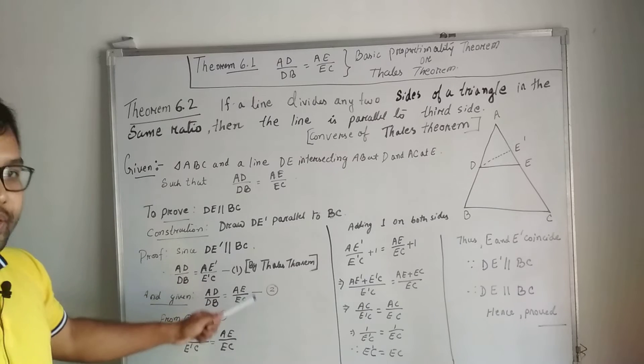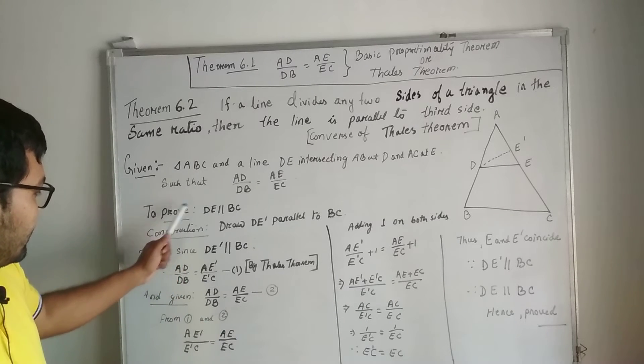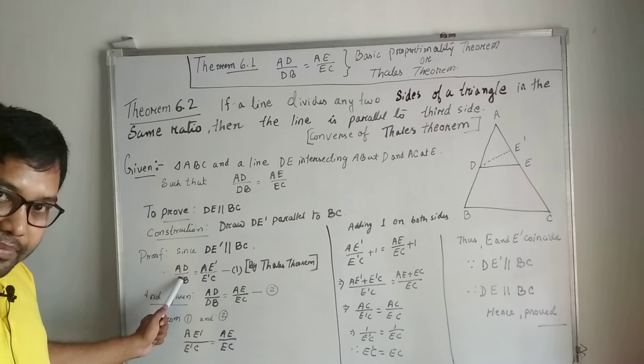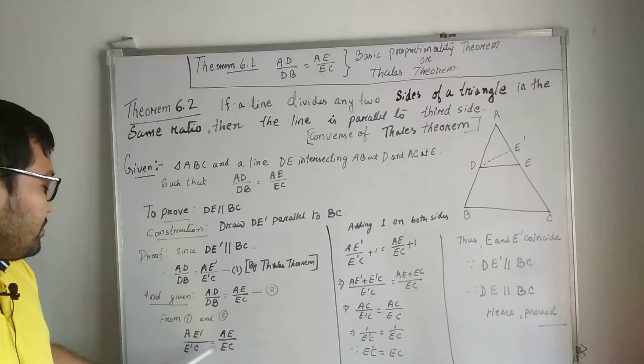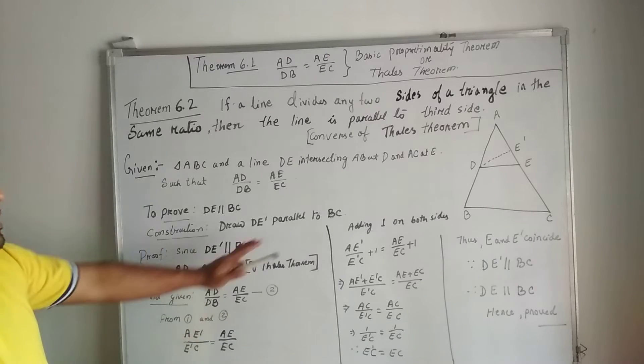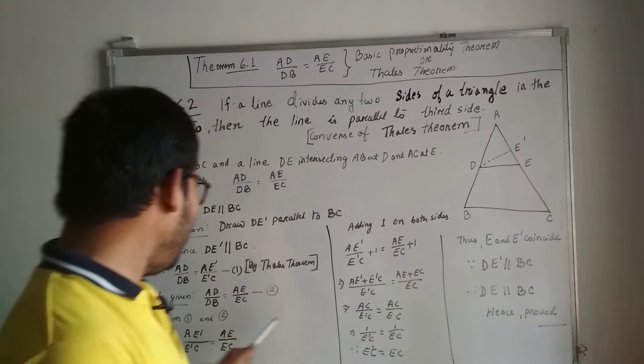Now from equations one and equation two, we see AD by DB equals AD by DB. Since the left-hand side here is equal, the right-hand side is equal. Then adding one on both sides.